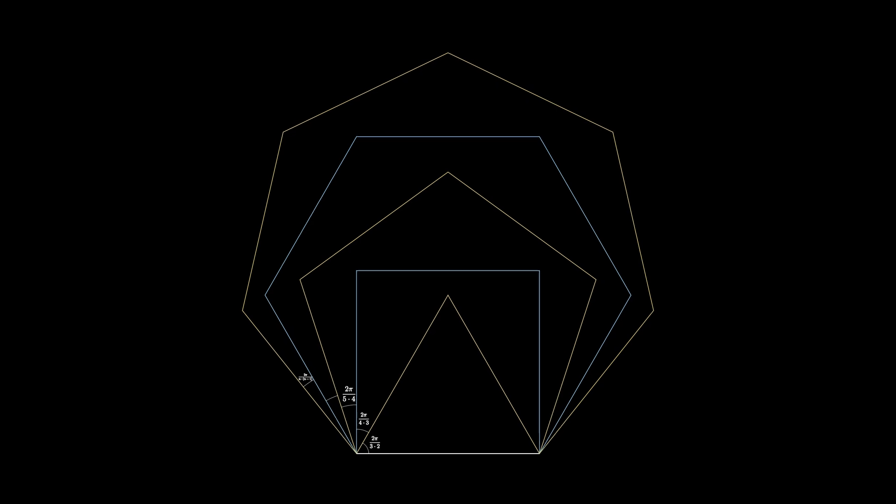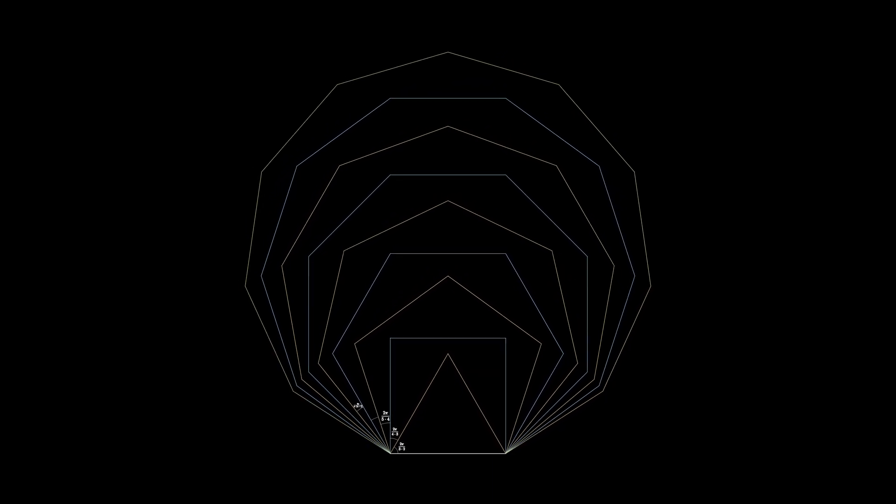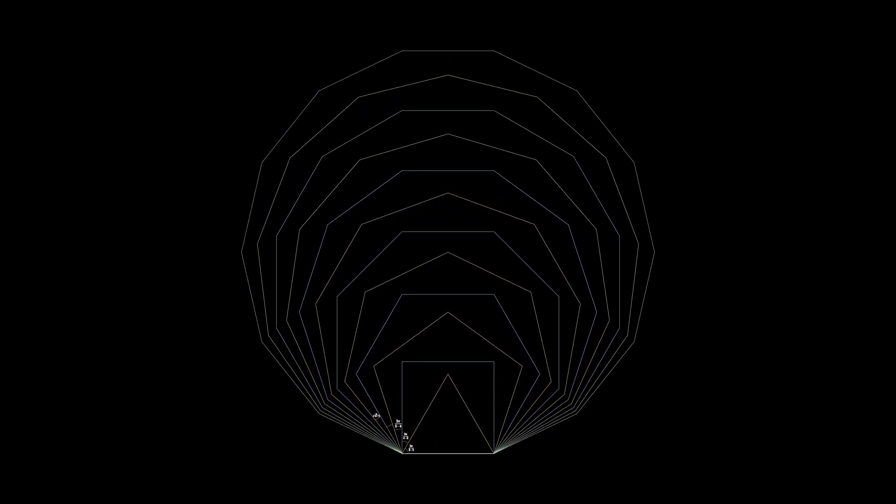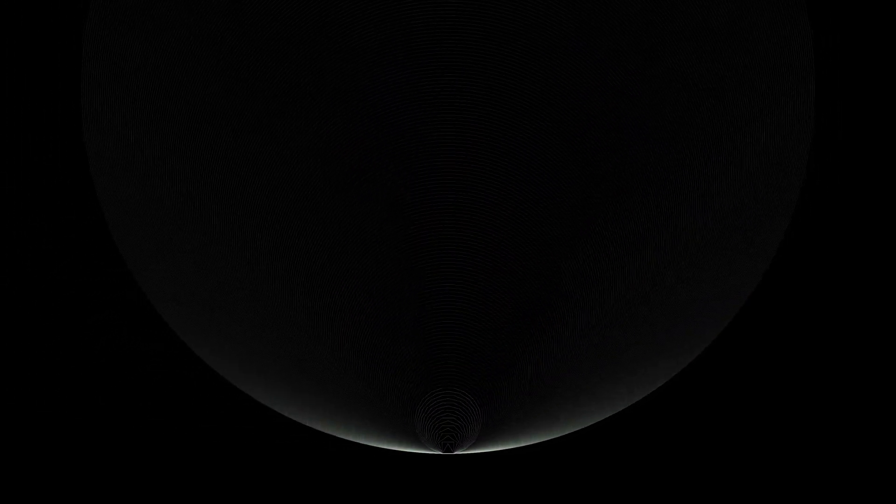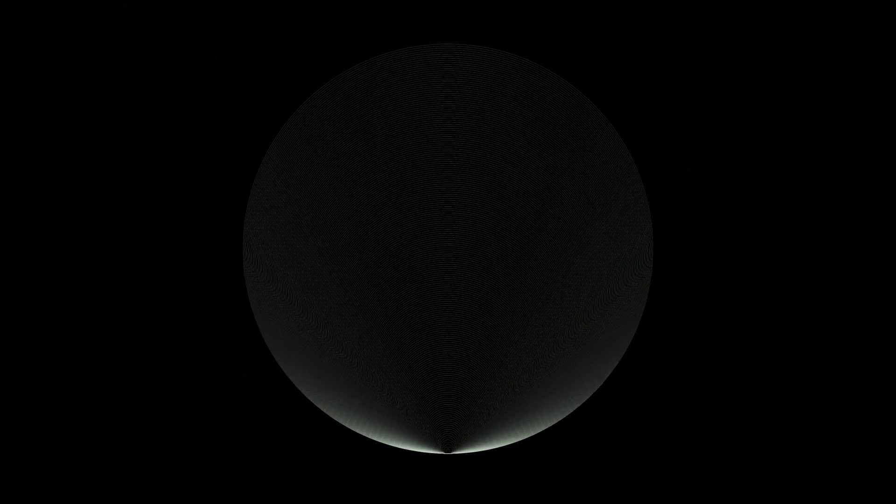But now we can just keep extending this picture, drawing more and more regular polygons where the number of sides increases indefinitely. In fact, we can consider a limiting shape of this process. The limiting outer shell of the resulting shape is a circle.